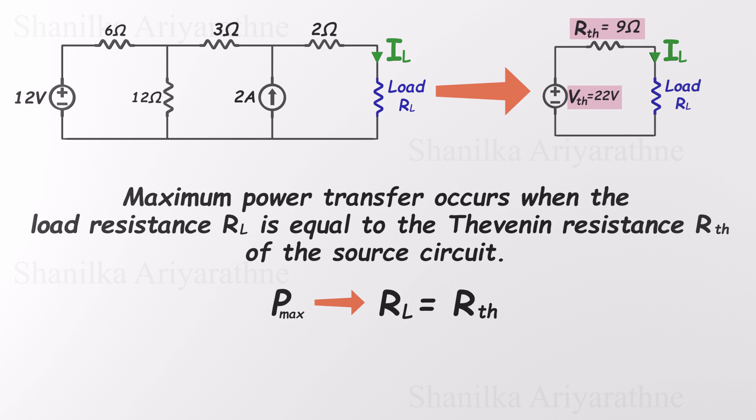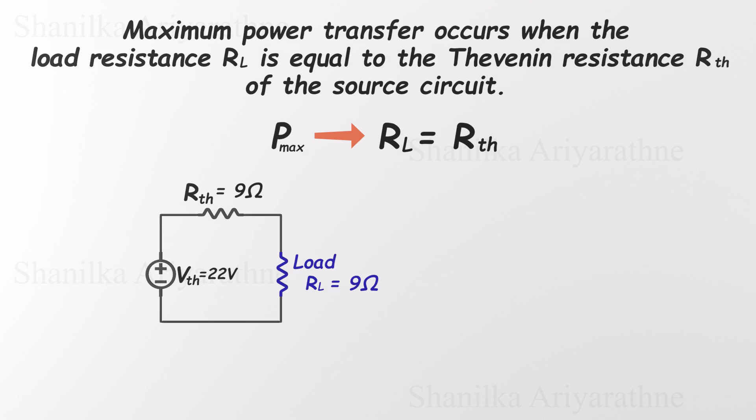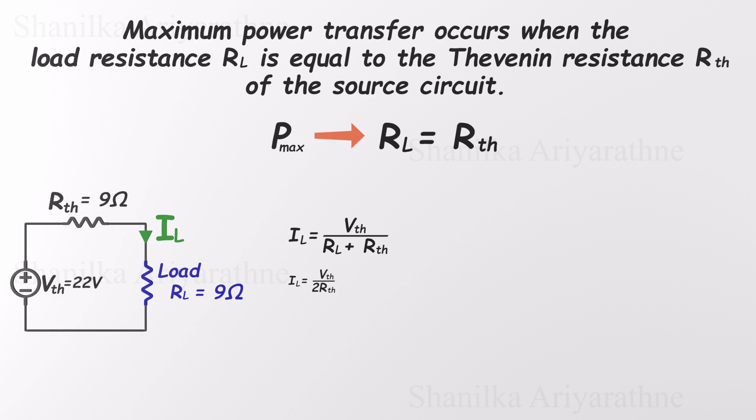According to the maximum power transfer theorem, the maximum power is delivered to the load when the load resistance equals the Thevenin resistance. In our case, the Thevenin resistance is 9-ohms, so the load resistance RL must also be 9-ohms. Now let's calculate the current using Ohm's law. Next, we calculate the power delivered to the load. So, the maximum power this circuit can transfer to the load is 13.44 watts. And to get that full amount, the load resistance must be exactly 9-ohms. Match the load to the source, and you'll get the most out of your circuit.